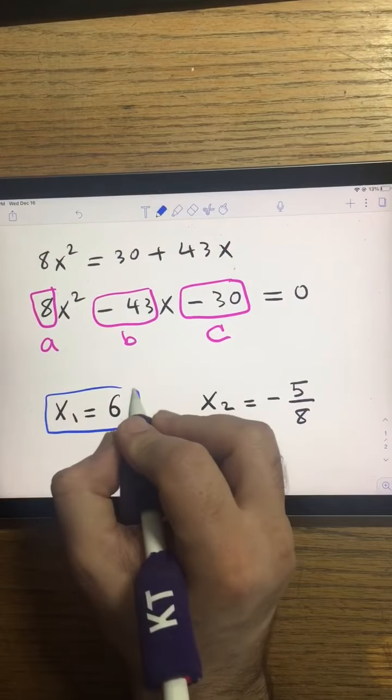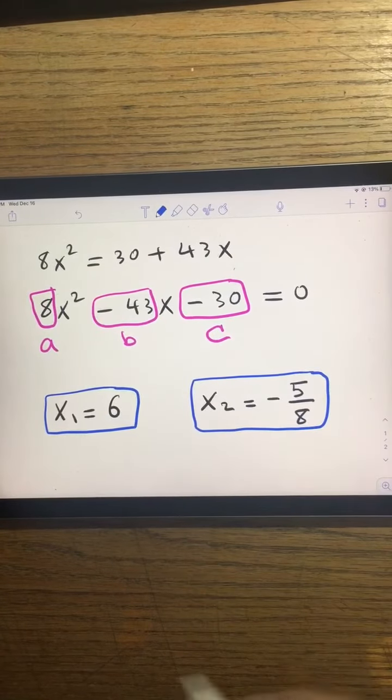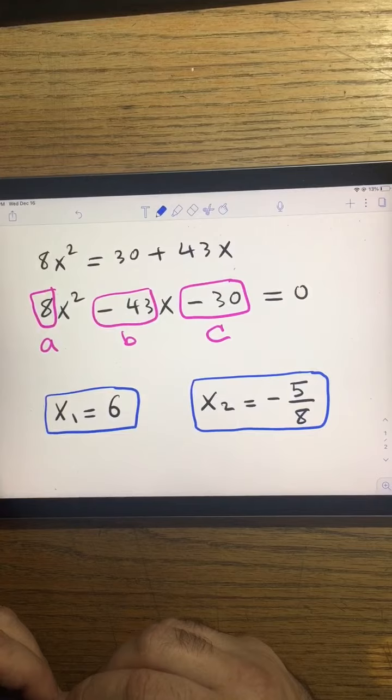So one solution is 6 and the other solution is negative 5 over 8. Now let me circle the answer.